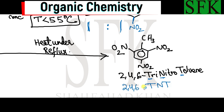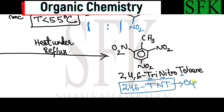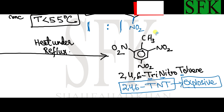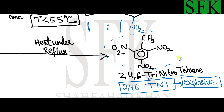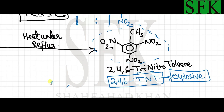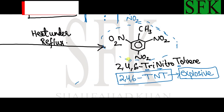Yes, this is the same explosive — TNT is used as an explosive. So 2,4,6-trinitrotoluene is basically this compound of benzene that is used as an explosive. This is what TNT really is.